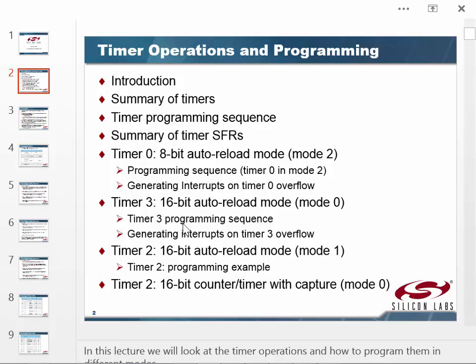These are the timers. A timer is exactly what it sounds like — a special register that will increment every so often depending on what we configure. We have multiple things we can generate with a timer. Timer zero is an 8-bit auto-reload mode 2 programming sequence. Timer three is also a 16-bit auto-reload mode where we can generate interrupts. Auto-reload means it generates an interrupt and then reloads the same value and starts counting again.